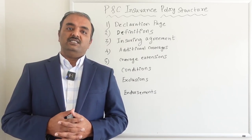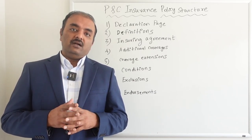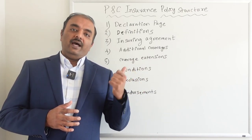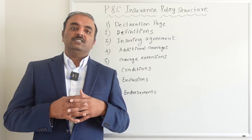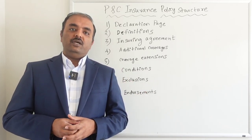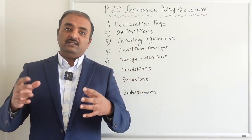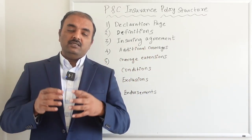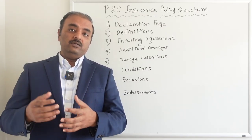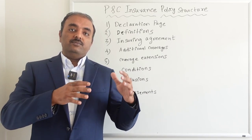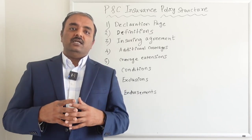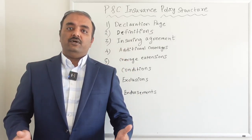Endorsements allow customization of a standard policy. Since each customer is unique, if they want a specific coverage not covered by the standard policy, they can use an endorsement to add it. For example, if you have a commercial property with boiler machines and need specific coverage, you can add an endorsement called equipment breakdown, which will cover those boilers if something happens. You can add any number of endorsements to get full coverage for your policy.